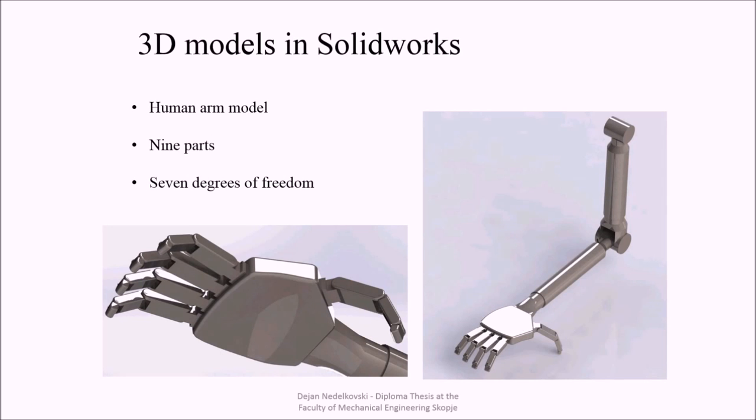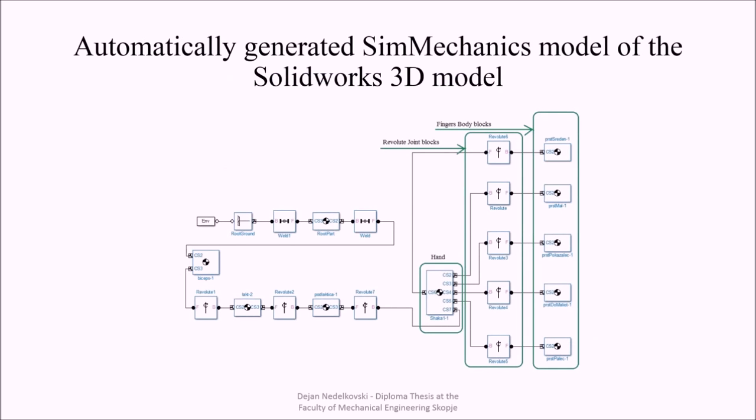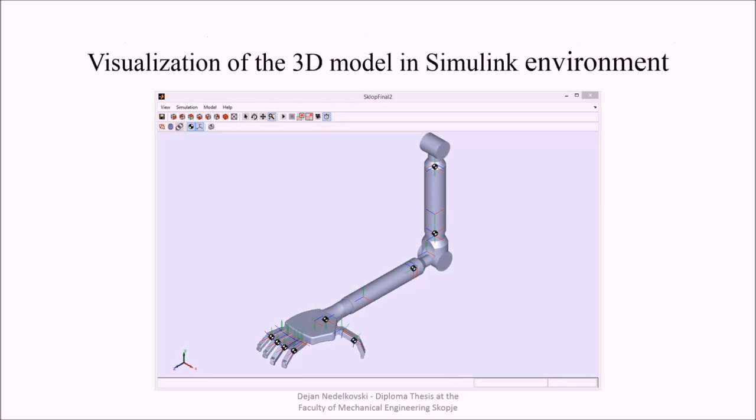The 3D model is a representation of a human arm and it has 9 parts with 7 degrees of freedom. This is the workflow when using the SimMechanics Link to transfer the 3D model into Simulink model. The Simulink model is automatically generated with all the body and joint blocks. And this is the visualization of the 3D model in Simulink environment.